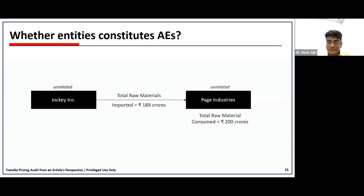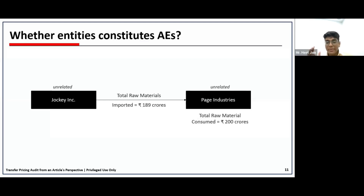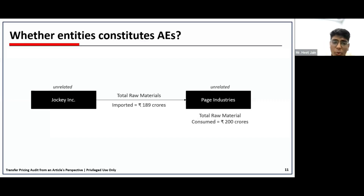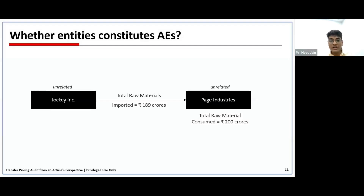There is Jockey INC — a non-resident — and Page Industries — a resident. Both entities are unrelated. Jockey INC exports raw materials and Page Industries imports raw materials worth 189 crores from Jockey INC, wherein the total consumption of raw material is 200 crores. The question is: whether Jockey INC and Page Industries would be regarded as deemed associated enterprises under the subsections we discussed.